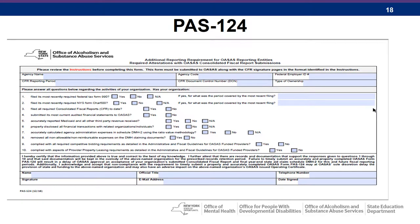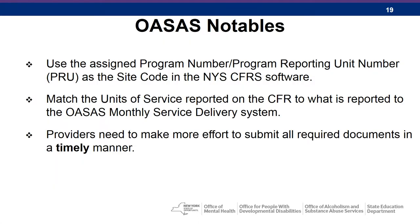This is a screenshot of the PAS-124. Use the assigned program number or program reporting unit number as a site code in the New York State CFRS software. Match the units of service reported on the CFR to what is reported to the OASIS monthly service delivery system. Providers need to make more effort to submit all required documents in a timely manner.